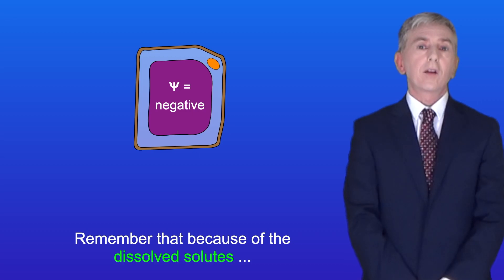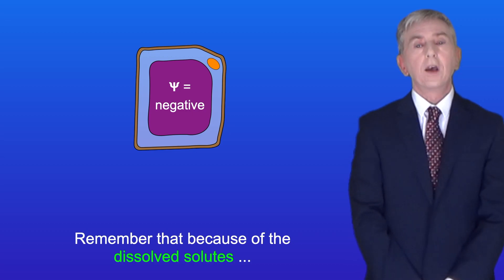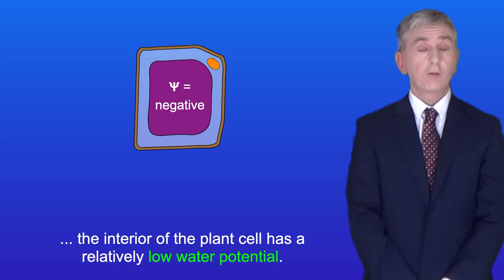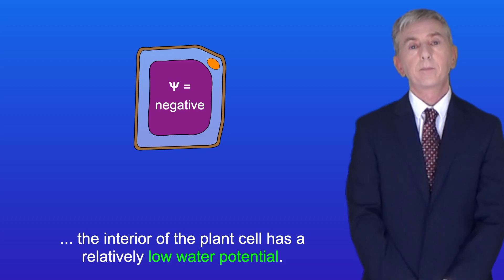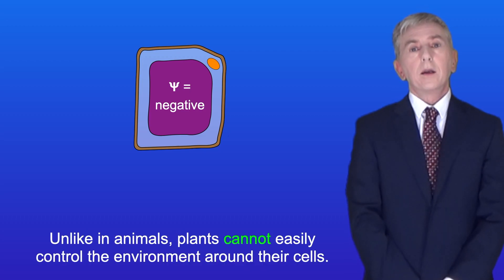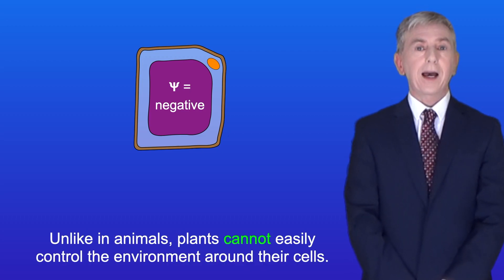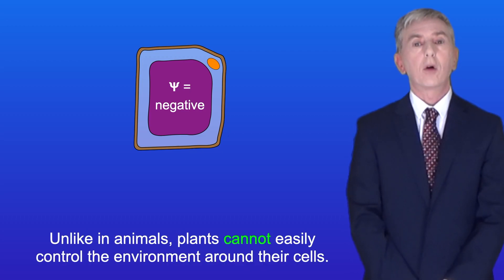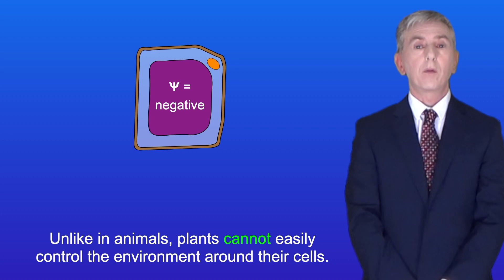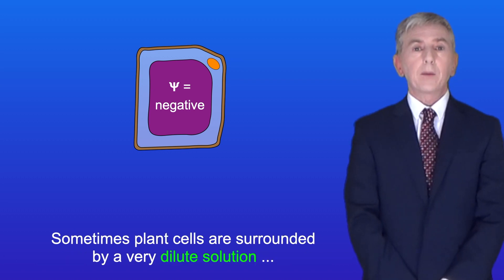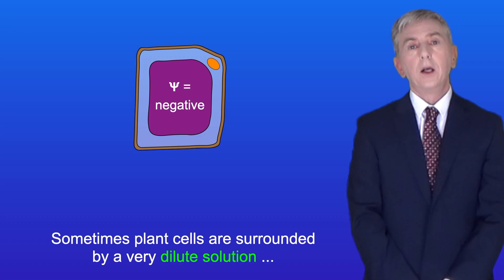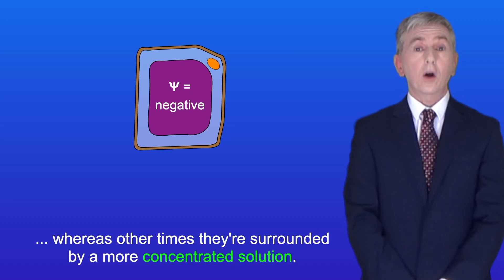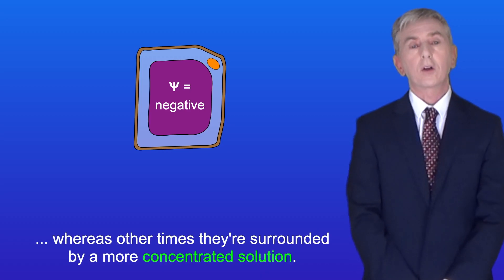Because of the dissolved solutes, the interior of the plant cell has a relatively low water potential. Unlike in animals, plants cannot easily control the environment around their cells — sometimes plant cells are surrounded by a very dilute solution, whereas other times they're surrounded by a more concentrated solution.